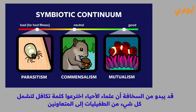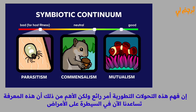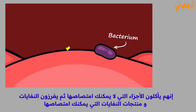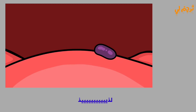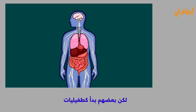It might seem silly that biologists invented the word 'symbiosis' to encompass everything from parasites to cooperators, but the reason is that parasites can evolve to become cooperators and vice versa. Understanding these evolutionary transitions is fascinating, but more importantly this knowledge is now helping us control diseases. For example, many of the bacteria living in your intestines actually help you digest your food — they eat the parts you can't absorb and excrete waste products that you can absorb. Most microbes living inside us today have a mutualistic or commensalistic relationship with us, but some of them started out as parasites.